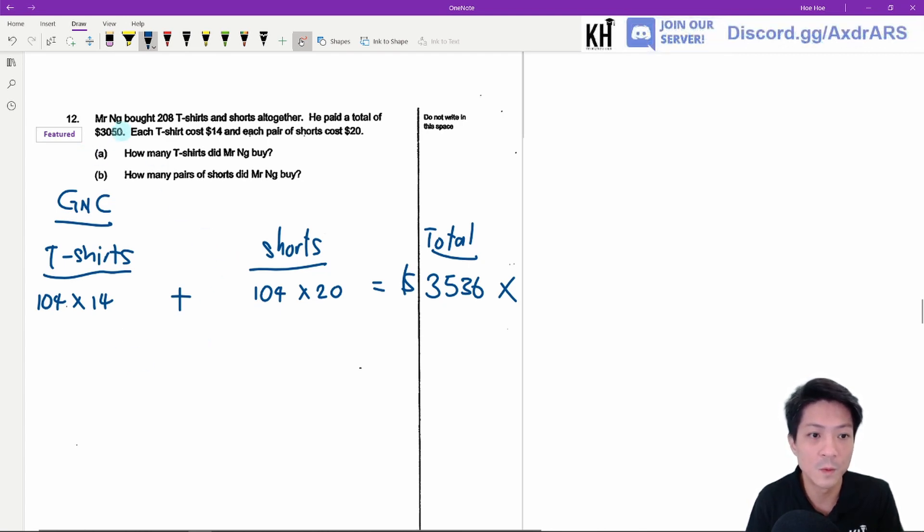So we are above the actual amount. So what we need to do is we need to decrease this amount. To decrease the amount, we probably need to increase the number of t-shirts and decrease the number of shorts.